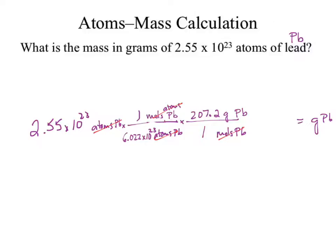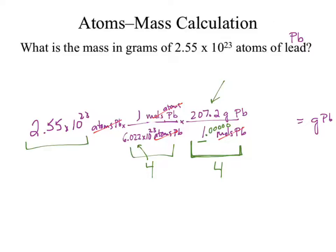Sig figs — how many sig figs in this conversion? Four. Notice we're only writing one; that's really 1.00000 — our infinite value. It's the gram that's carrying our sig figs. Sig figs on the next one: I wrote it out at four because of our 6.022. The first number has three sig figs, which means my answer needs to be reported to three sig figs.